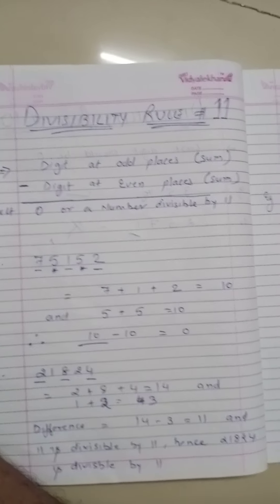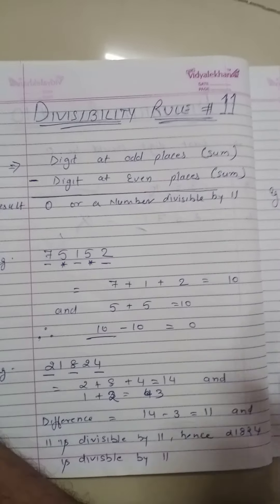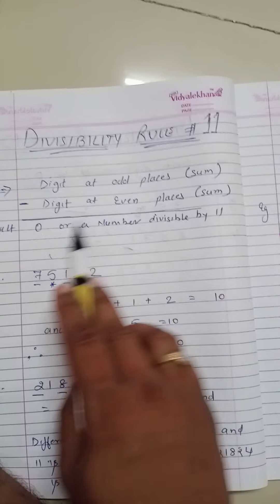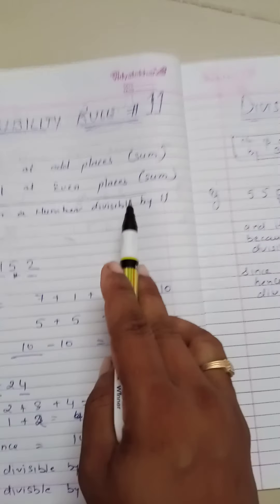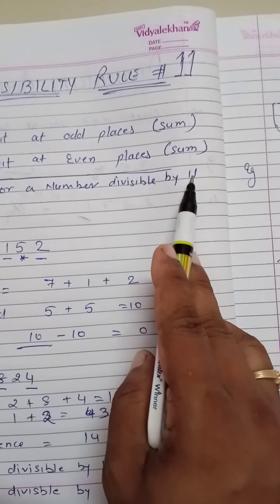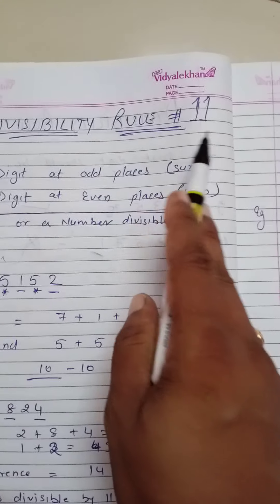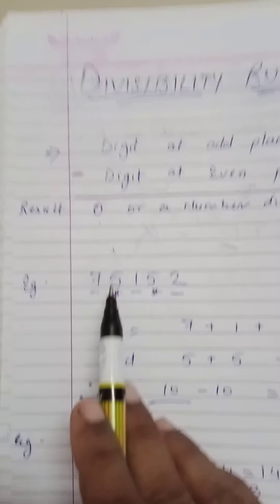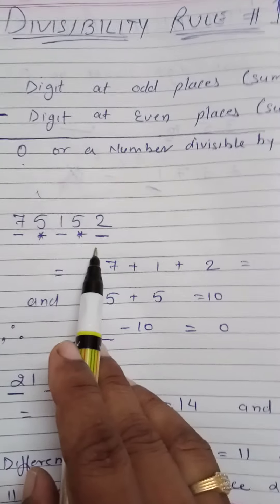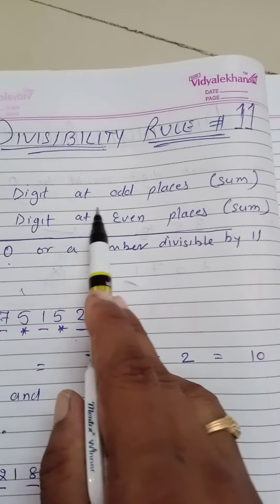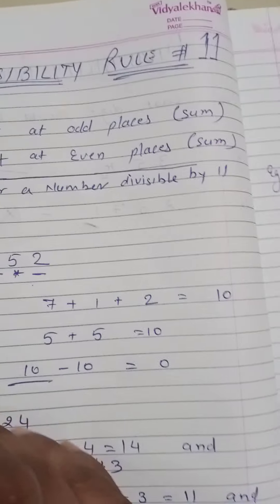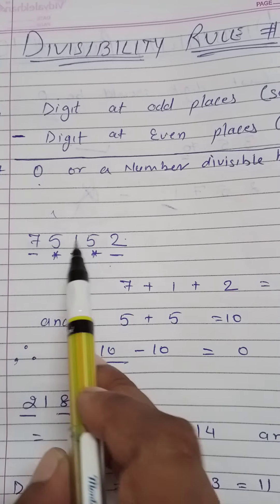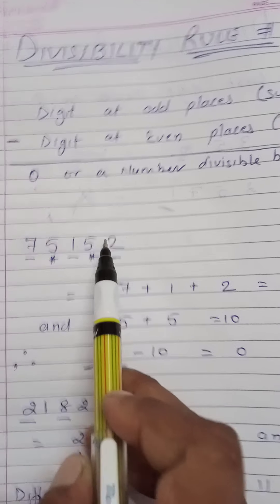The divisibility rule of 11: take the sum of digits at the odd places minus the sum of digits at the even places. If the answer is either 0 or a number divisible by 11, then the divisibility rule of 11 applies. For example, with 75152 — the odd-place digits are 7, 1, and 2, and the even-place digits are 5 and 5.